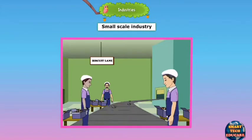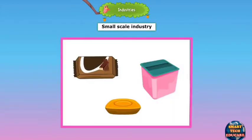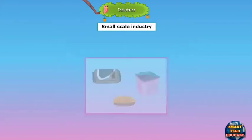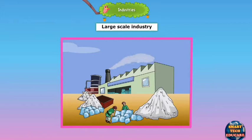Many more people are employed in small-scale industries than in cottage industries. In these industries, limited machinery is used to produce a larger quantity of goods. Products such as soaps, plastic goods, biscuits, and so on are made in small-scale industries.